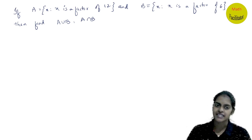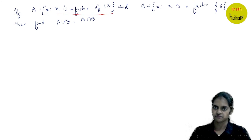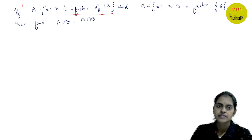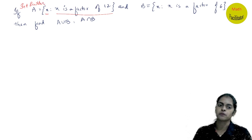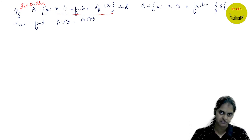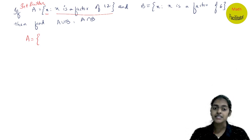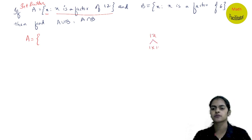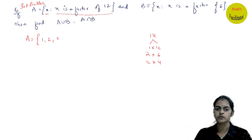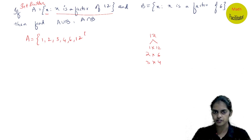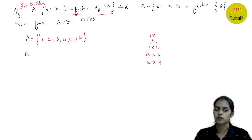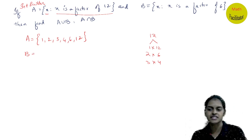First question: A is a set of elements containing x such that x is a factor of 12. This is set builder form. Set builder form can be converted to roster form. The factors of 12 are: 1 × 12, 2 × 6, 3 × 4 — so factors are 1, 2, 3, 4, 6, and 12. In roster form, the elements are listed out.